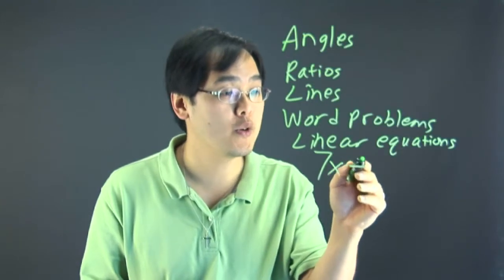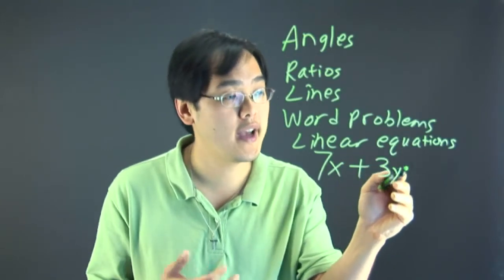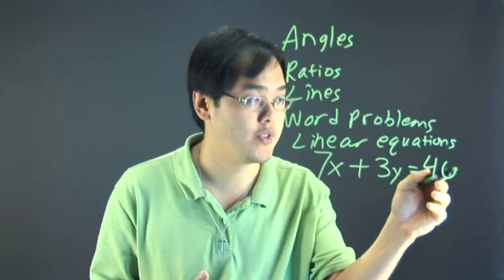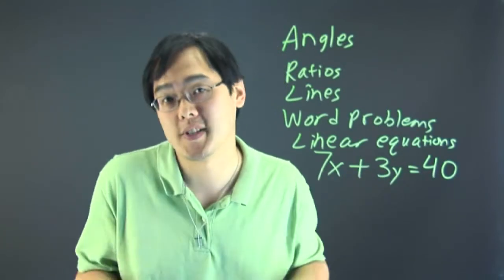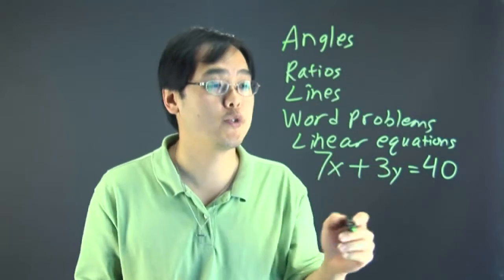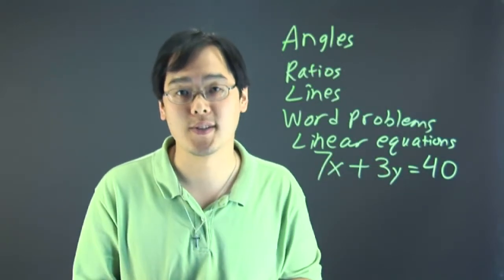And you can use field goals, which are worth three points, 3y equals to, let's just say, 40 points. You can kind of say the number of touchdowns or field goals needed to score 40 points, for example. It's just a thought. But linear equations would play a nice integral role in tying it to football.